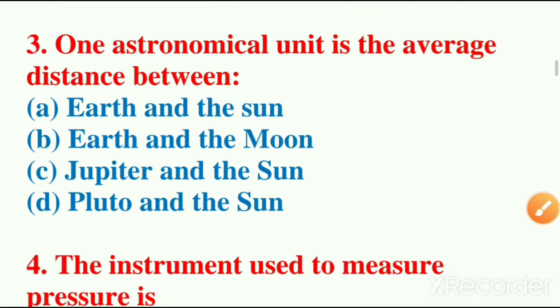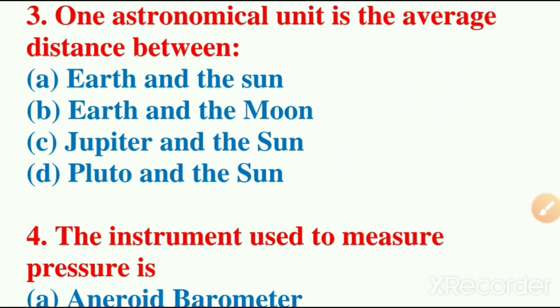Third question: one astronomical unit is the average distance between? Options are Earth and the Sun, Earth and the Moon, Jupiter and the Sun, Pluto and the Moon. And the correct answer is Earth and the Sun.